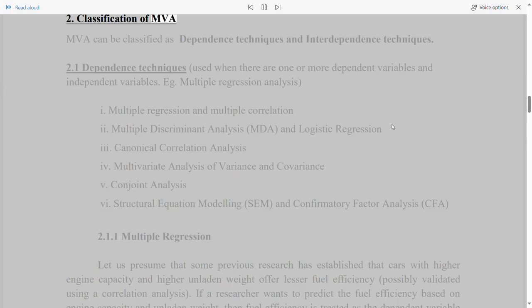2. Classification of MVA. MVA can be classified as dependence techniques and interdependence techniques. 2.1 Dependence techniques used when there are one or more dependent variables and independent variables. For example, multiple regression analysis: 1. Multiple regression and multiple correlation 2. Multiple discriminant analysis, MDA, and logistic regression 3. Canonical correlation analysis 4. Multivariate analysis of variance and covariance 5. Conjoint analysis 6. Structural equation modeling, SEM, and confirmatory factor analysis, CFA.